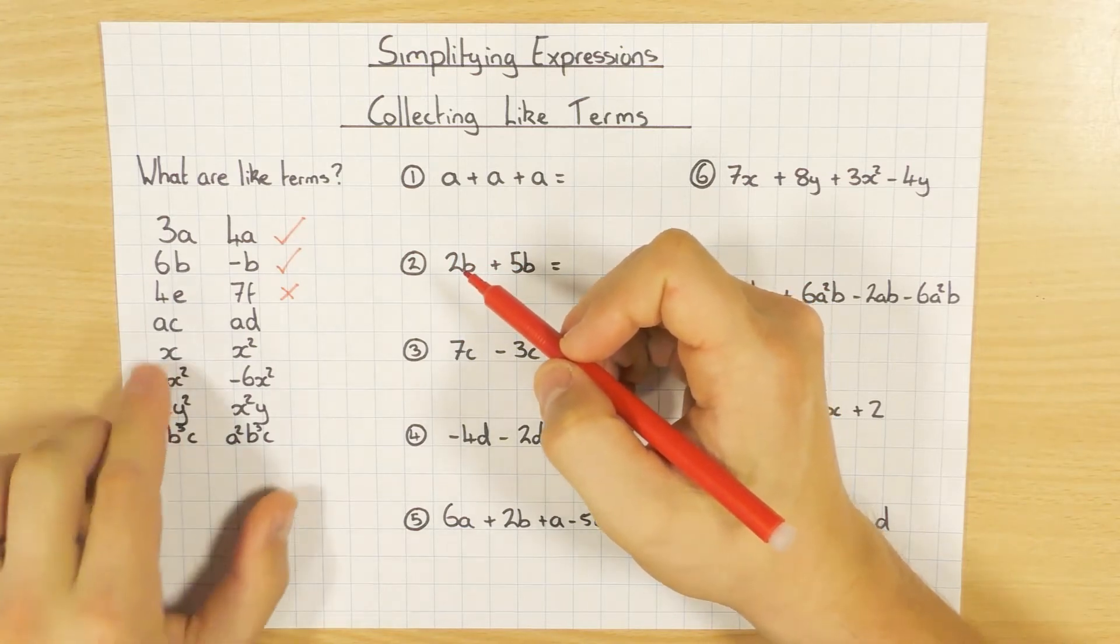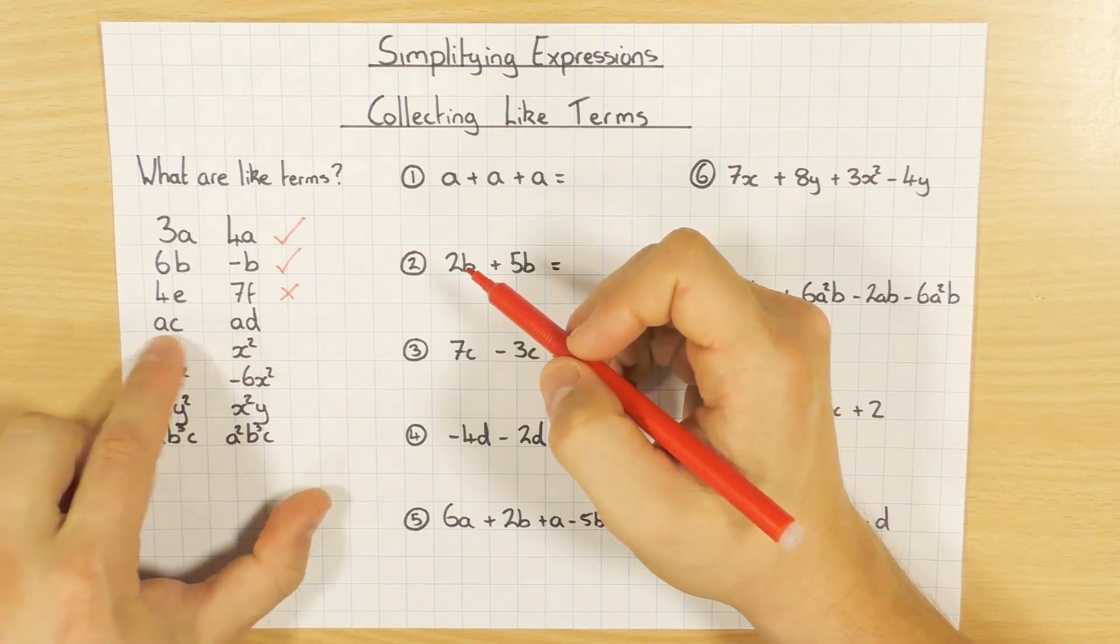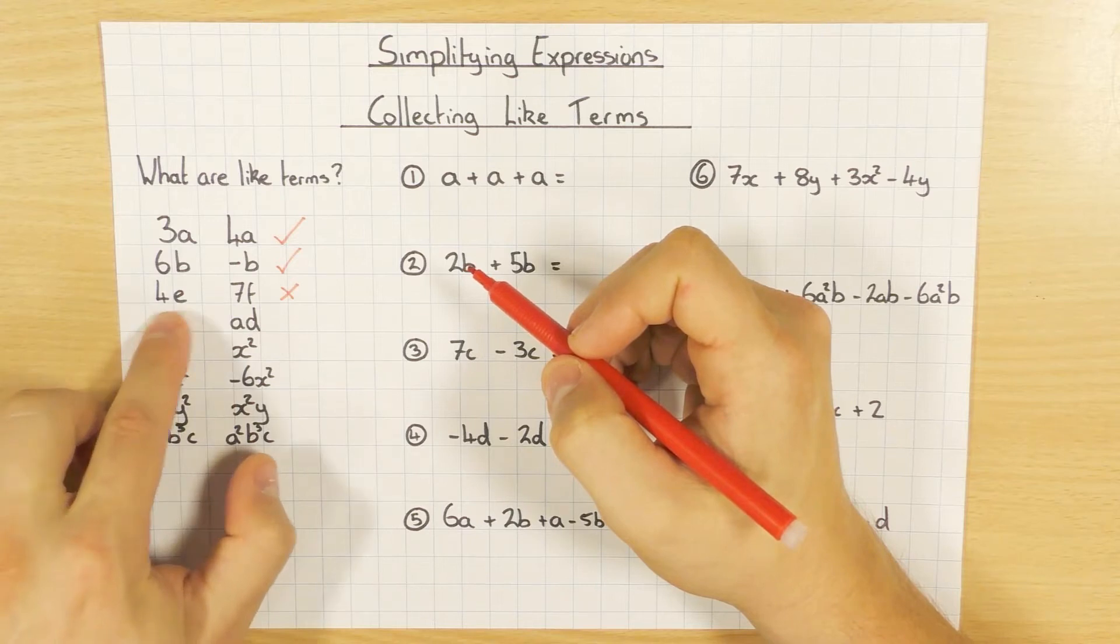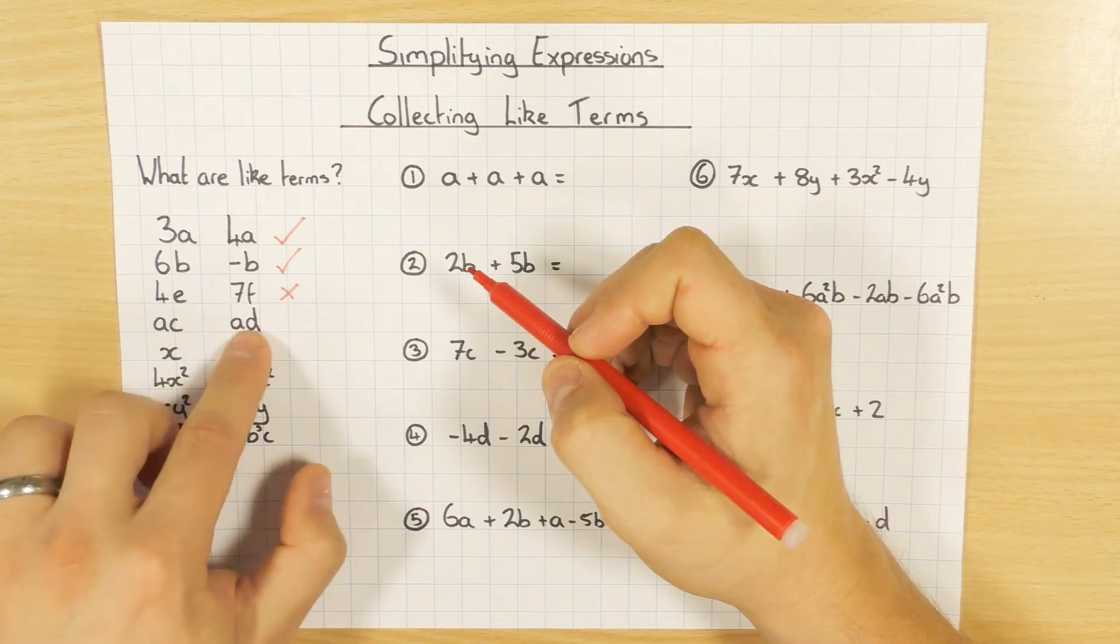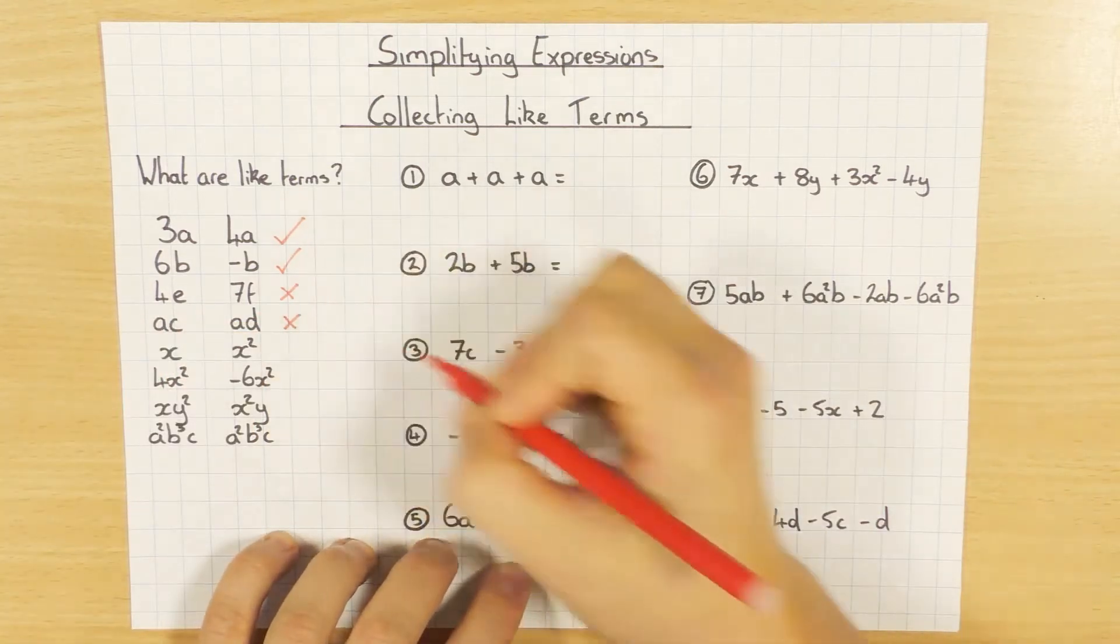Sometimes you can have terms that have more than one variable, more than one letter. So I've got AC and AD. Now, although the A's are the same, the C's and the D's aren't, and they must be exactly the same. AC and AC, AD, that would work. Or AD and AD, that would work. But they're slightly different. So these are not like terms.